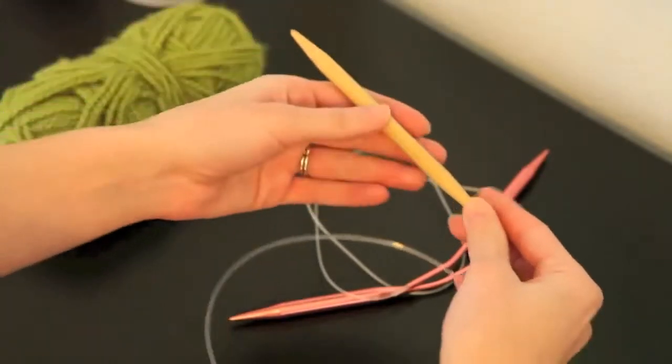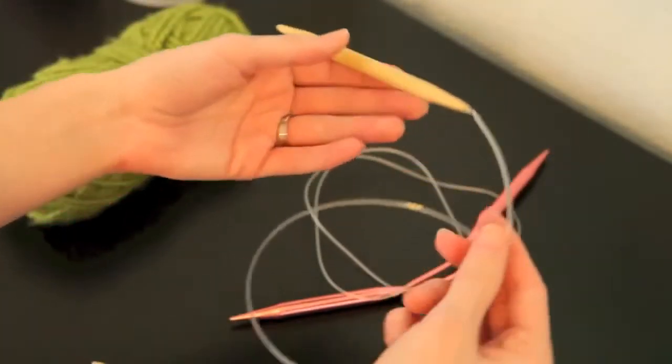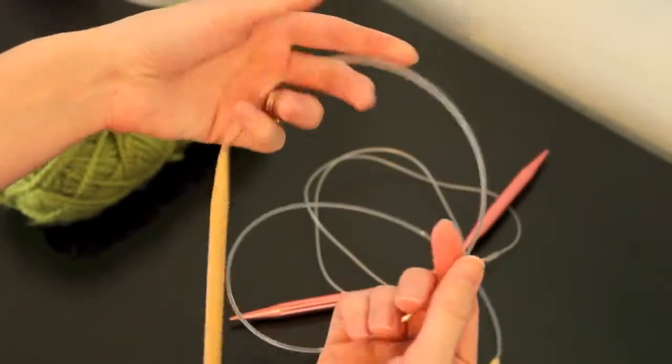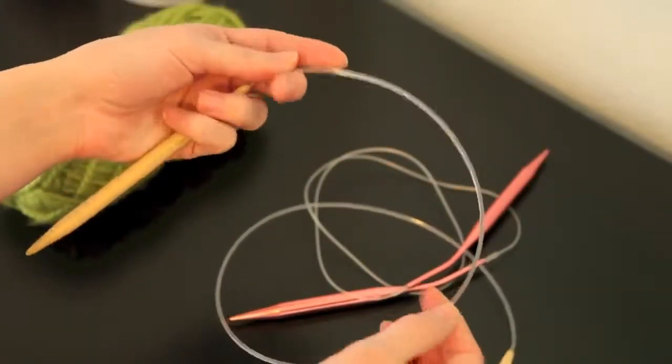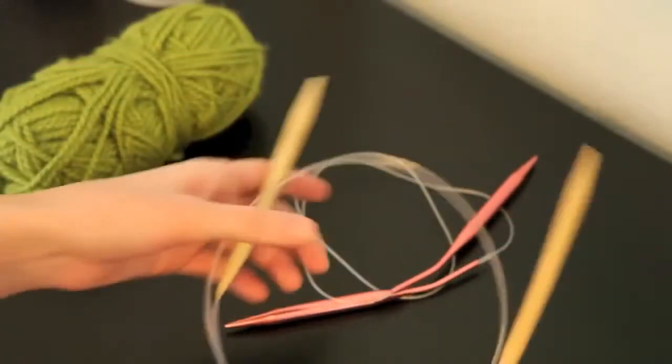I knit on circular needles when I'm doing the scarf just because the cable in between really helps hold everything together nicely since it is such a very wide scarf. However, you can use straight needles for your knitting needles if you want to.